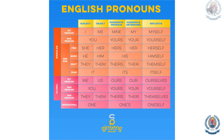Take a look at this table. You can see how a subject pronoun can change into different types of pronouns. I, me, mine, my, myself. You, yours, your, yourself. She, her, hers, her, herself. He, him, his, himself. They, them, theirs, themselves. It, its, itself. We, us, ours, our, ourselves. You, yours, your, yourself. They, them, theirs, themselves. One, ones, oneself.